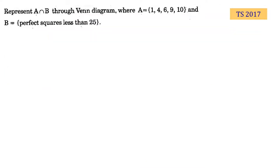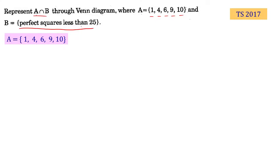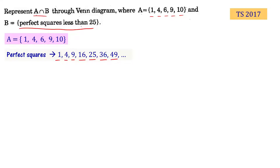Let's look at this problem. Represent A intersection B through a Venn diagram where A is a set of elements {1, 4, 6, 9, 10} and B is the set of elements that are perfect squares less than 25. Set A is given in roster form. For set B, the perfect squares are: 1² = 1, 2² = 4, 3² = 9, 4² = 16, 5² = 25, and so on. Since B is the set of perfect squares less than 25, B = {1, 4, 9, 16}.